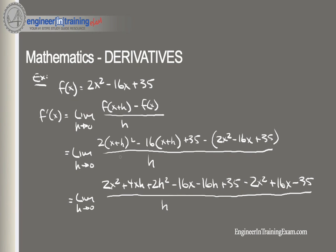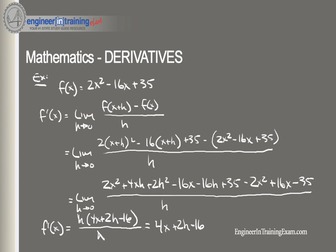Continuing to simplify and eliminate terms, we get f'(x) = (4x + 2h - 16)h divided by h. The h's cancel, giving us 4x + 2h - 16. As h goes to 0, the 2h term is eliminated, so the derivative of this function is 4x - 16. That's the long way, but it works for any function.